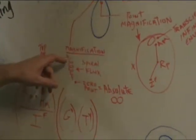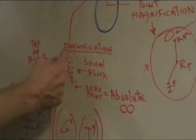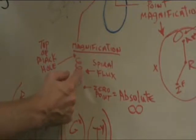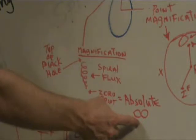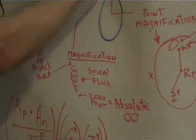And this creates a black hole because you have this spiral flux. And as it goes down, it converges to zero point. It's absolute infinity, which is represented here as well.